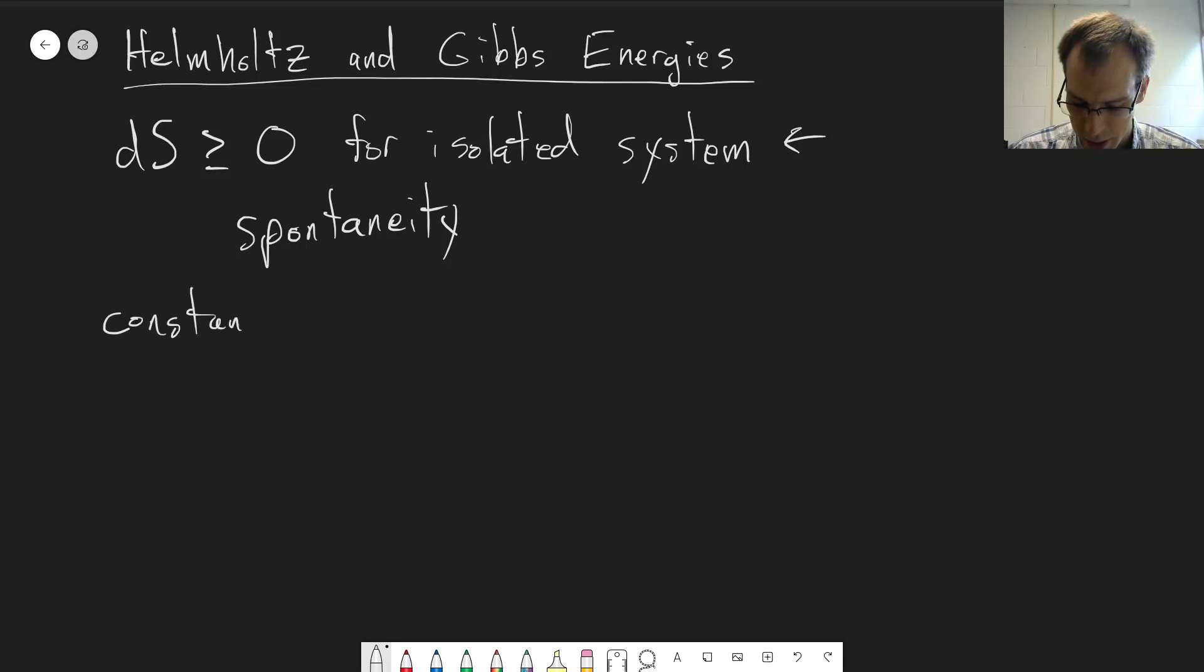So first we're going to consider a system at constant temperature and volume. Constant volume so that we don't have to worry about work involved. If it's a constant volume system, then there's no work possible because the volume can't change if we're considering pressure volume work.